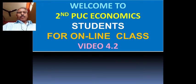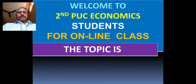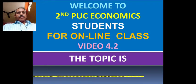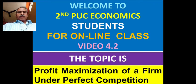This is video 4.2 from 4th chapter, The Theory of Firm Under Perfect Competition. The topic is The Profit Maximization of a Firm Under Perfect Competition.